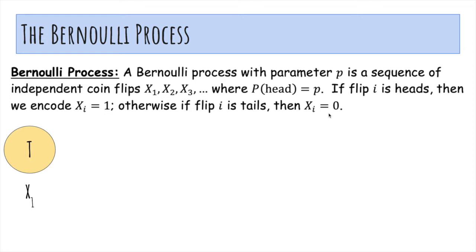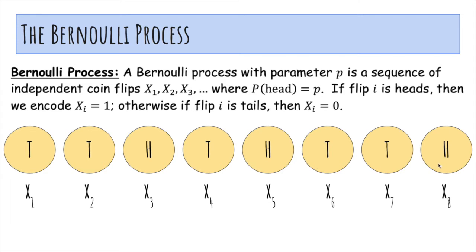This is like the indicator random variable. Here's X₁ being tails, X₂ being tails, X₃ being heads, and then a bunch more, and forever.